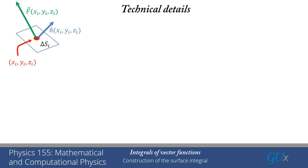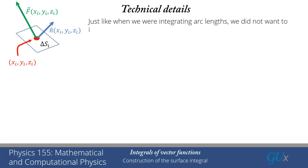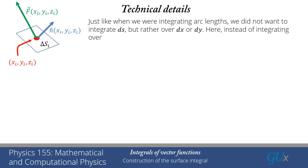Now we'll talk about the technical details of how we perform these integrals. As with arc lengths, we don't want to integrate over ds directly, but rather over dx or dy as more controllable variables. Similarly here, we don't want to integrate over ds because it changes from one patch to another — we'd rather integrate over dx dy. We need to find a way to convert from the area element ds to dx dy.